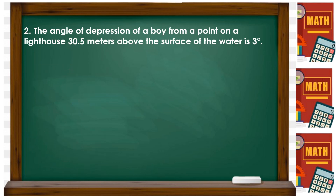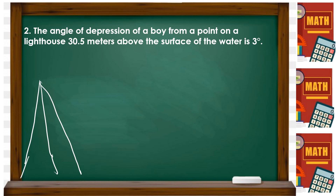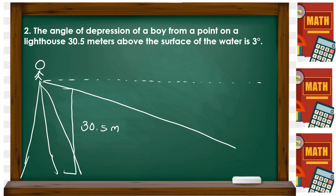For number two: the angle of depression of a boy from a point on the lighthouse, 30.5 meters above the surface of the water. There's a lighthouse with a boy on it. This one is 30.5 meters. You have to show first the horizontal line, and then the angle of depression going downward, which is 3 degrees. Just illustrate it this way — show the given and the angle of depression.